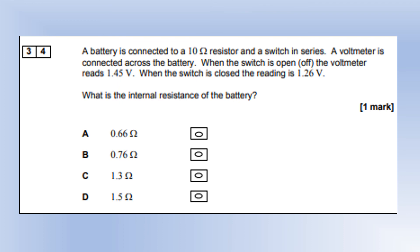A battery is connected to a 10 ohm resistor and a switch in series. A voltmeter is connected across the battery. When the switch is open, the voltmeter reads 1.45, that's the EMF. When the switch is closed, the reading is 1.26, which is the terminal voltage. What's the internal resistance? First, I figured out the current when the switch is closed. So we do the terminal voltage divided by the external resistance, giving us 0.126 amps. Then we can put that into our EMF equation and figure out the resistance is 1.5 ohms, which concludes this video and the 2016 paper.